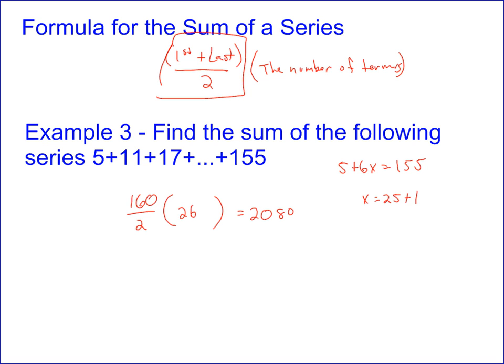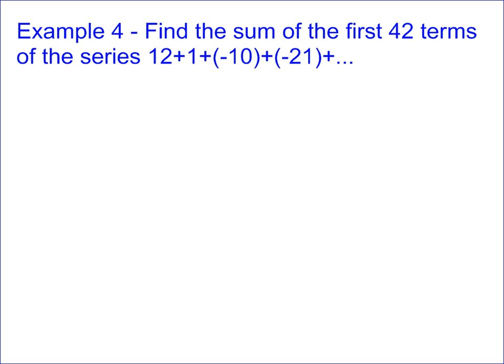The last problem is a similar type problem, except this time it says find the sum of the first 42 terms of this series. To do that, we need to know what the last term is, because it's first plus the last. We know it's going to be 12 plus something, divided by 2, times 42. We just need to know what that last term is.